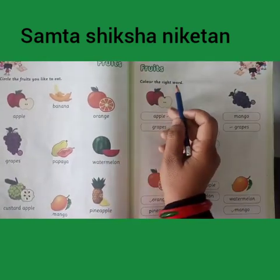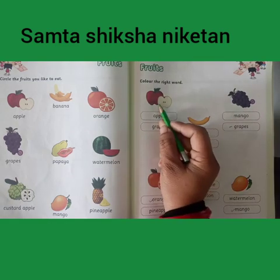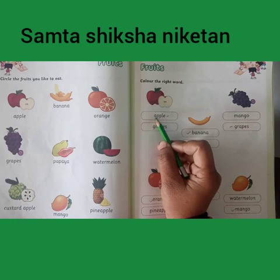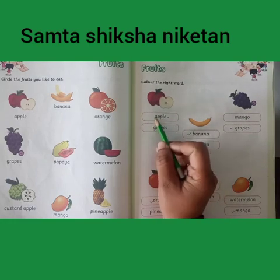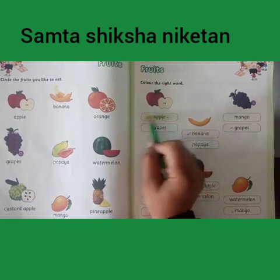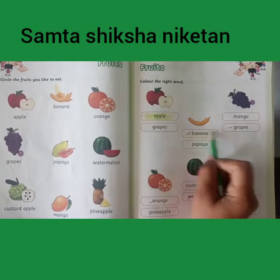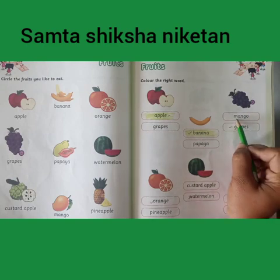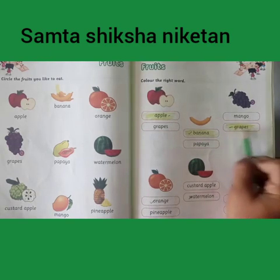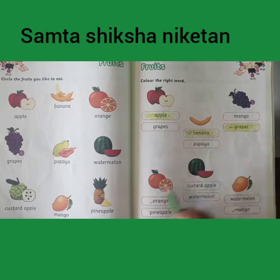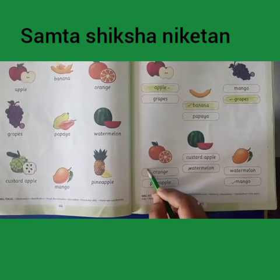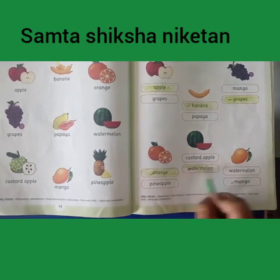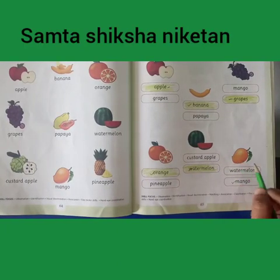Students, this is your homework: Color the right word. Students, aapko picture identify karna hai, aapko color fill karna hai. What is this? This is apple, so you have to color on apple. Aapko apple ke box mein color fill karna hai. Next is banana, so you have to color on banana. Then grapes, so you have to color on grapes. This is orange, so you have to color on orange. Watermelon, so you have to color on watermelon. This one is mango, so you have to color on mango.